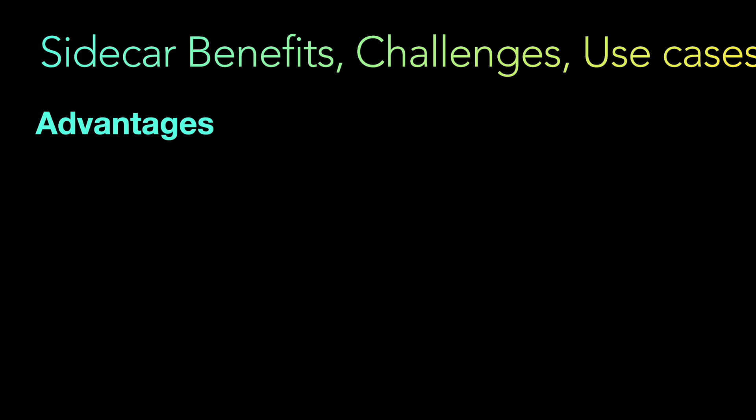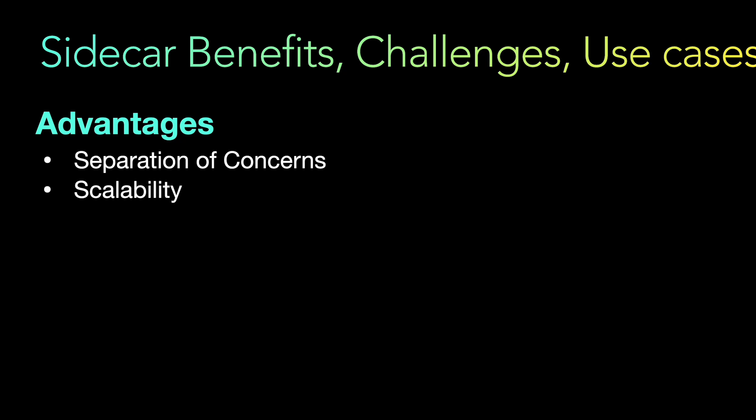Starting with the advantages: separation of concerns — each component, the primary application and the sidecar, has a distinct responsibility, which promotes a modular and maintainable code base. Scalability — the primary application can scale independently of the sidecar, allowing for flexible and efficient resource allocation. Reusability — the sidecar functionality can be reused across multiple microservices without duplicating code.